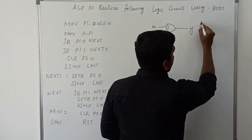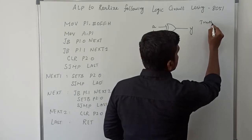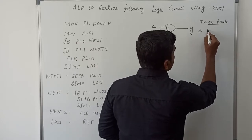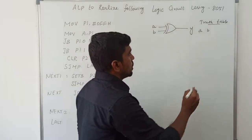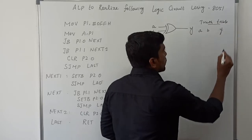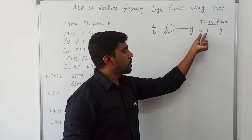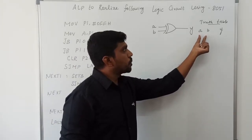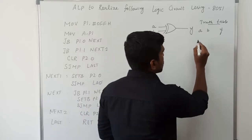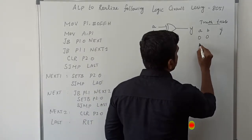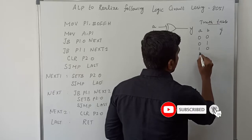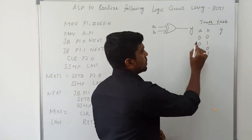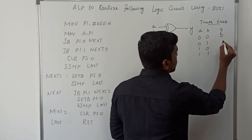After drawing the symbol, I will write the truth table. Inputs are two variables, output is a single variable. A and B are the input values. These two variable inputs produce four combinations: 0-0, 0-1, 1-0, 1-1.